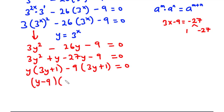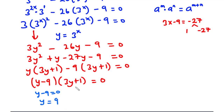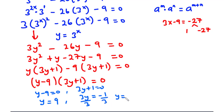Factorizing gives us y minus 9 times 3y plus 1 equals 0. So either y minus 9 equals 0, giving y equals 9, or 3y plus 1 equals 0, giving 3y equals negative 1, so y equals negative 1 over 3.